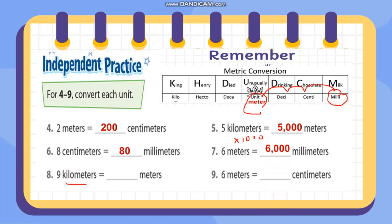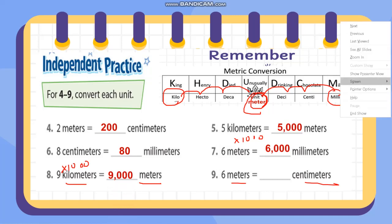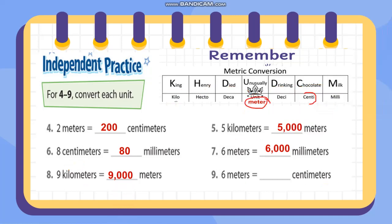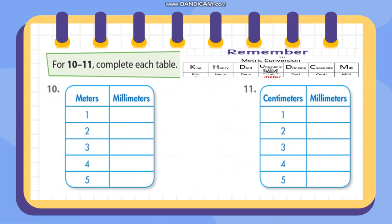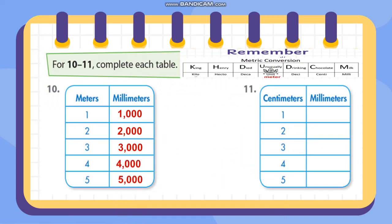9 kilometers to meters: from kilo to meter, multiply by 1,000, so 9 × 1,000 = 9,000 meters. 6 meters to centimeters: from meter to centi, multiply by 100, so 6 × 100 = 600 centimeters. Here is the table for meters to millimeters: 1 meter = 1,000 mm; 2 meters = 2,000 mm; 3 meters = 3,000 mm; 4 meters = 4,000 mm; 5 meters = 5,000 mm.